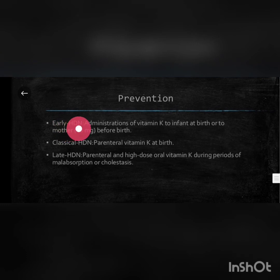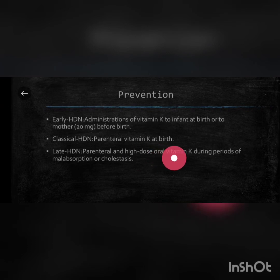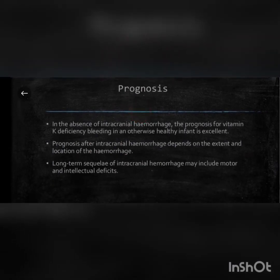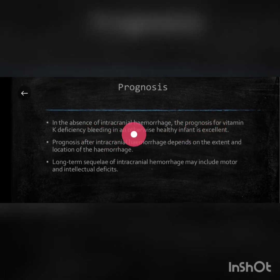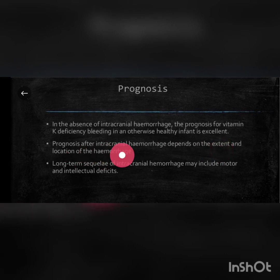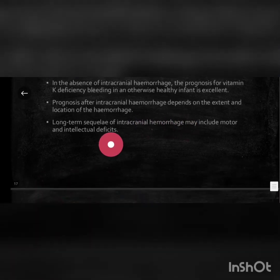Prevention: Early HDN — administration of vitamin K to infant at birth or to mother 20 mg before birth. Classical HDN — parenteral vitamin K at birth. Late HDN — parenteral and high-dose oral vitamin K during periods of malabsorption or cholestasis. Prognosis: in the absence of intracranial hemorrhage, the prognosis for vitamin K deficiency bleeding in an otherwise healthy infant is excellent. Prognosis after intracranial hemorrhage depends on the extent and location; long-term sequelae may include motor and intellectual deficits.